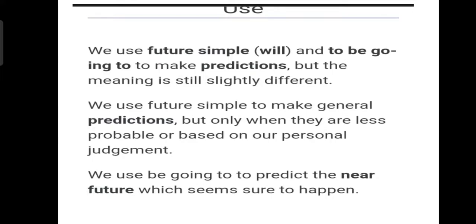The first one is we use future simple to make general predictions, but only when they are less probable or based on our personal judgment. If we are watching personal judgment purely, if we are going to do this work in our future.